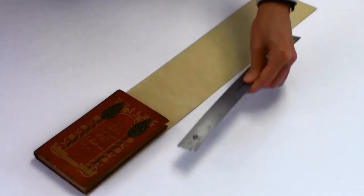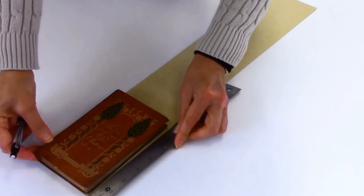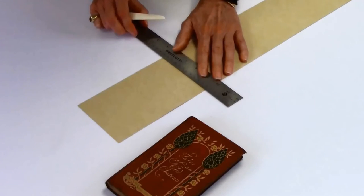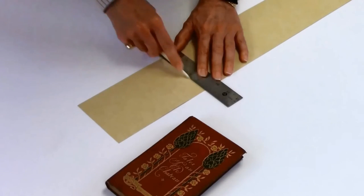Cut a cardstock strip with the same width of the book, with the grain running perpendicular. This is where you are going to fold the card.